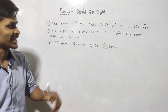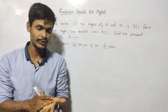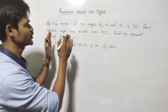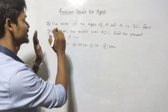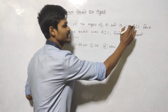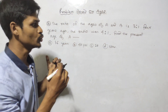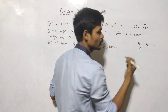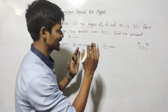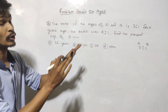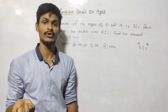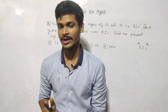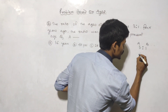Now question number two. The ratio of the ages of A and B is 3 to 1. Four years ago, the ratio was 4 to 1.